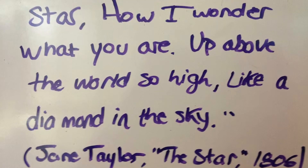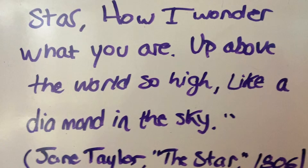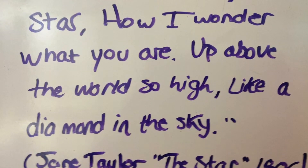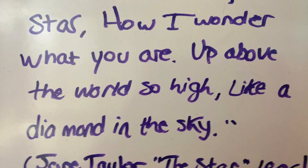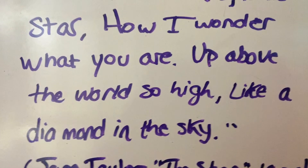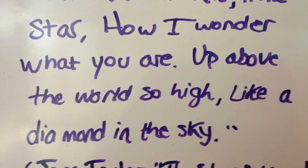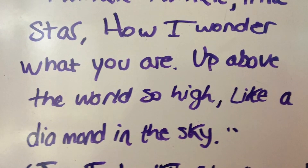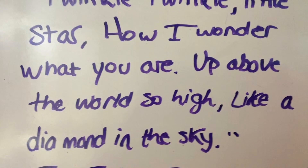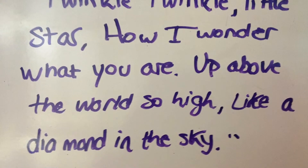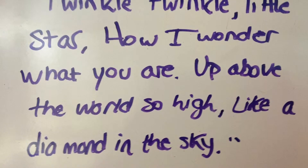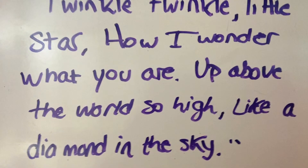An example of apostrophe is: "Twinkle twinkle little star, how I wonder what you are, up above the world so high, like a diamond in the sky." This quote is an example of apostrophe because it directly addresses a personified thing, in this case being the star. The author, Jane Taylor, is trying to display intense emotion in her feelings about the stars.